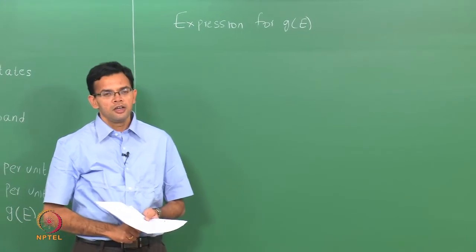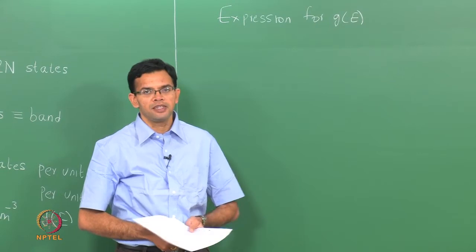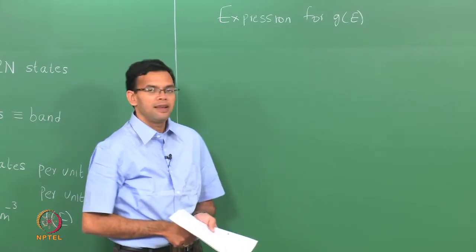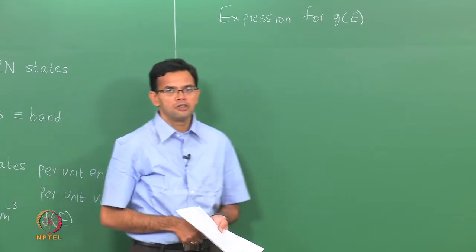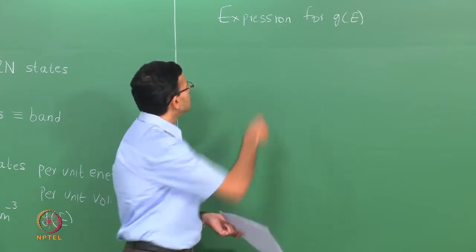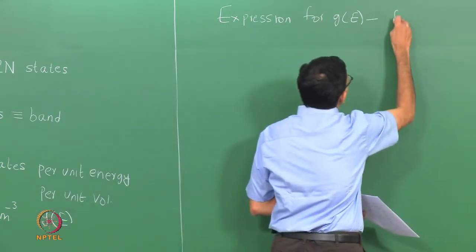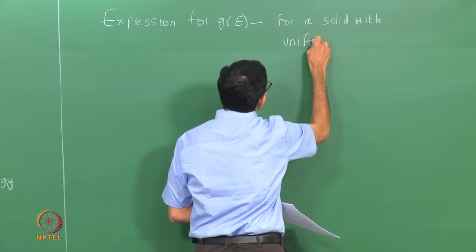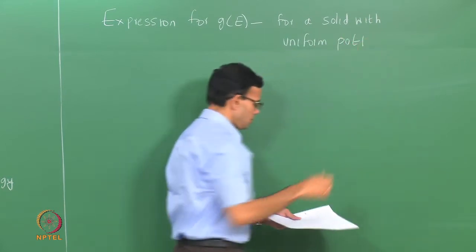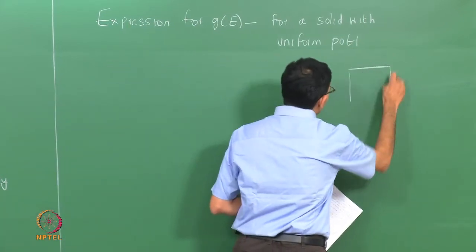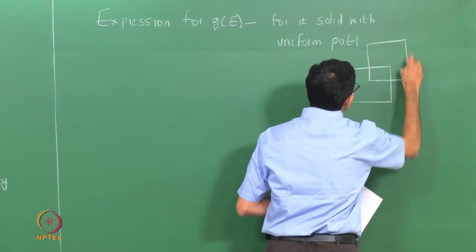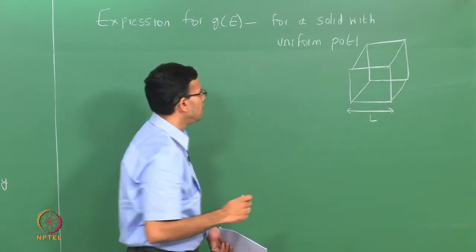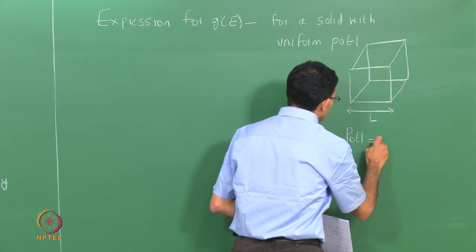In the case of a real solid, you can measure the local density of states by spectroscopic techniques such as a scanning tunneling microscope or photoelectron spectroscopy. We can also do calculations for density of states taking into account the distribution of atoms and electrons. But what we will do is derive a simple expression for G of E for a solid with uniform potential. To simplify matters further, we will take our solid to be a cube of length L, with the potential inside the solid taken to be 0, uniform.